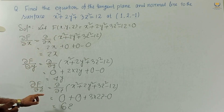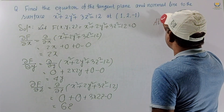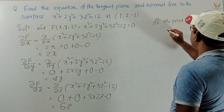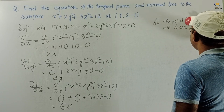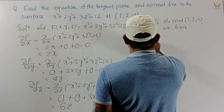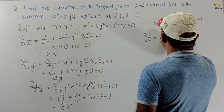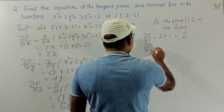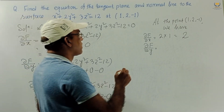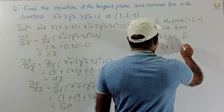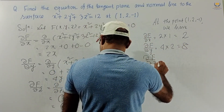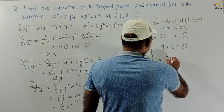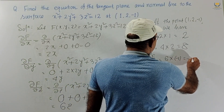Now we evaluate ∂f/∂x, ∂f/∂y, and ∂f/∂z at the point (1, 2, -1). We have ∂f/∂x = 2x = 2×1 = 2. ∂f/∂y = 4y = 4×2 = 8. ∂f/∂z = 6z = 6×(-1) = -6.